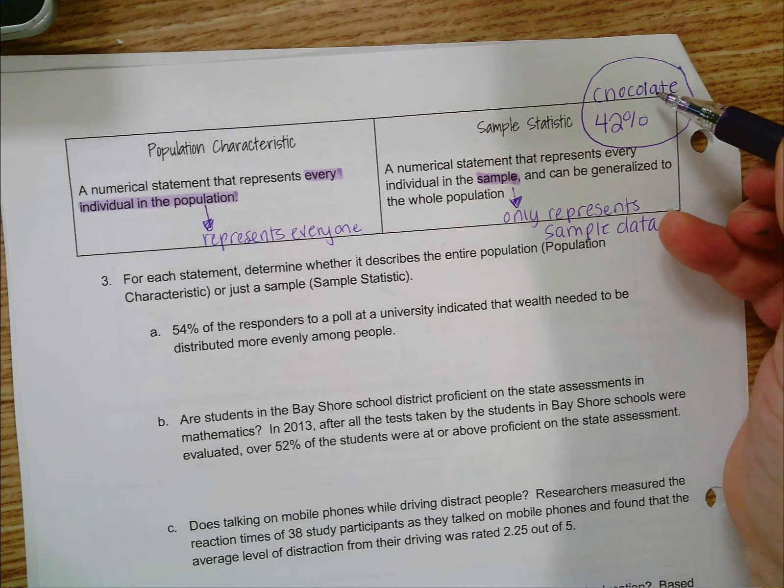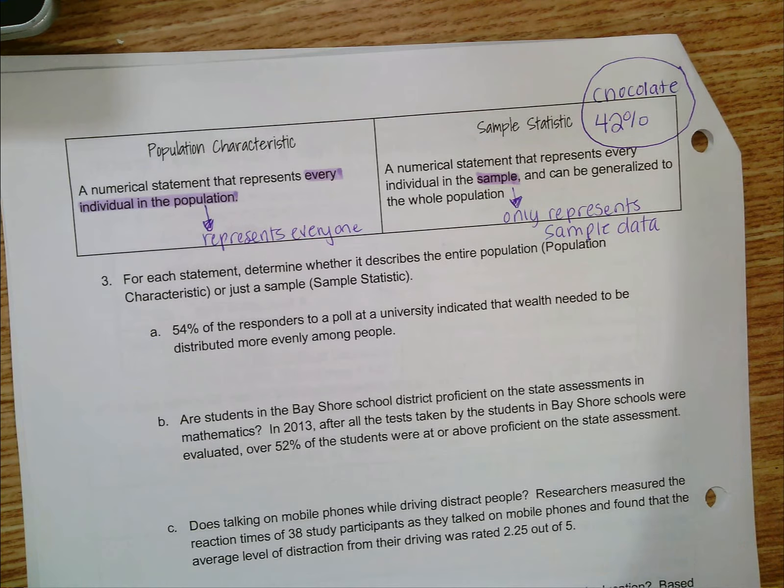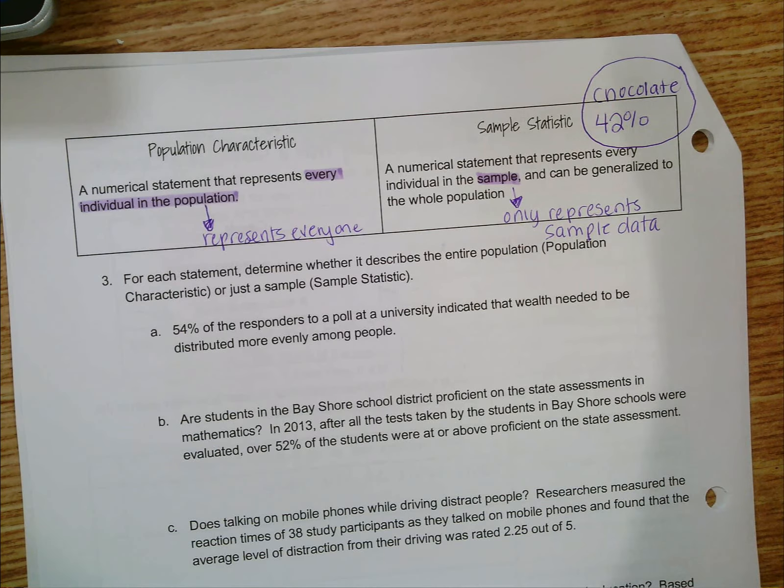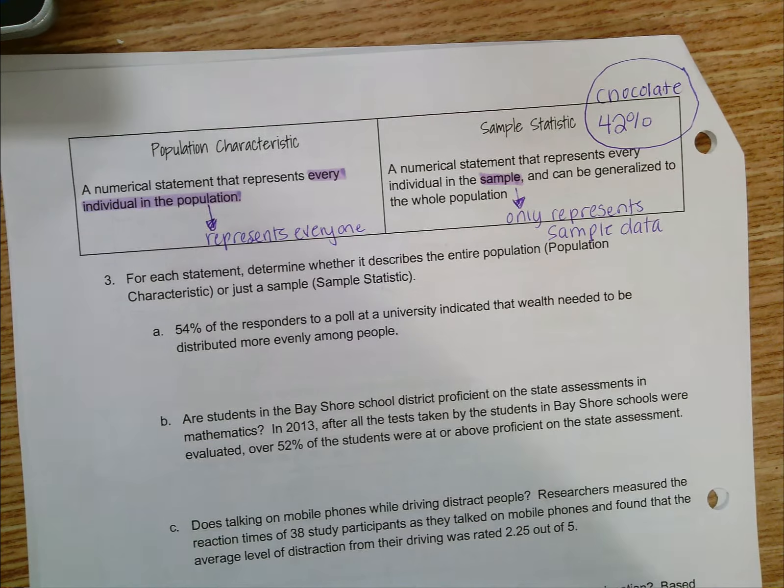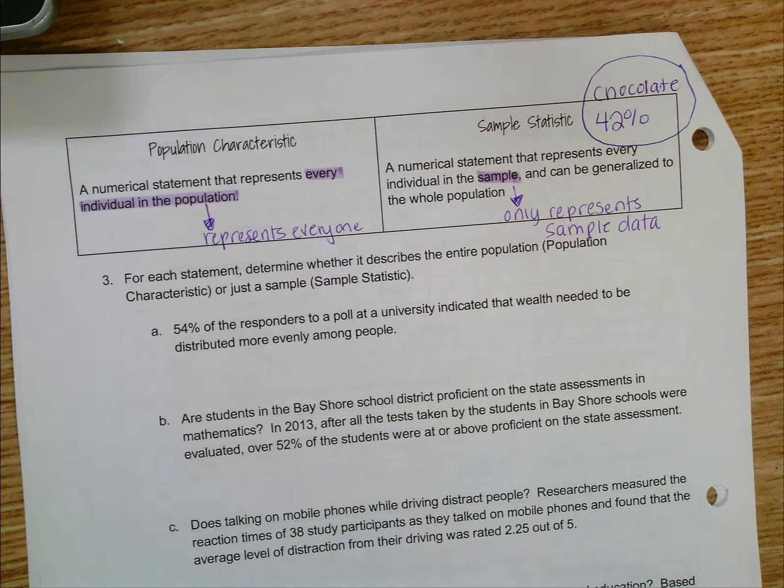draw that conclusion. We'll talk tomorrow about whether or not that's an okay conclusion to draw, but here's the thing: I can assume that it means that 42% of all students at Boynton prefer chocolate, but maybe it's